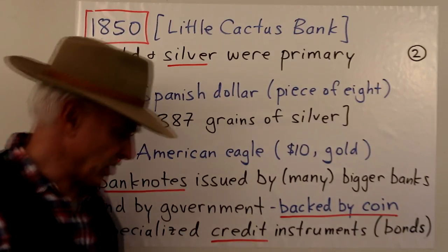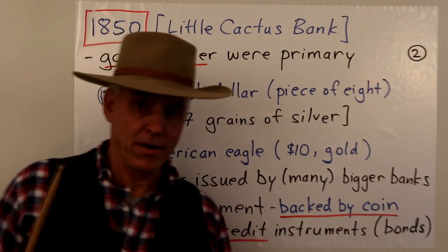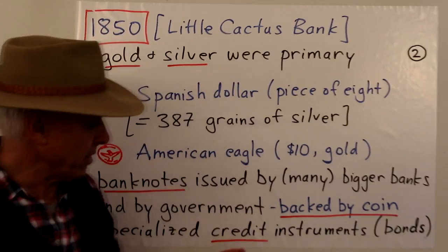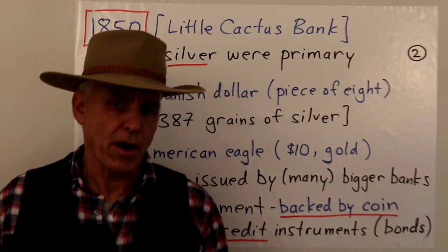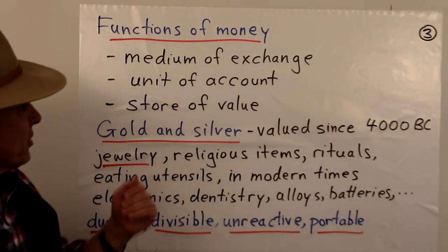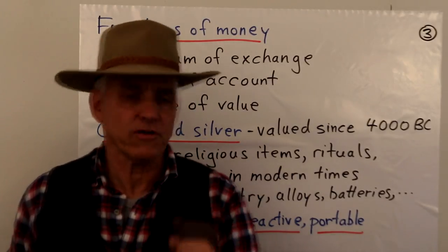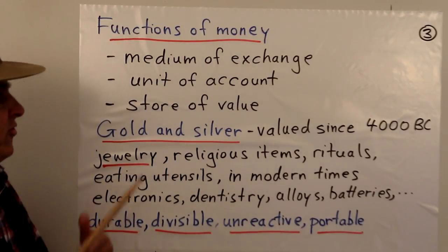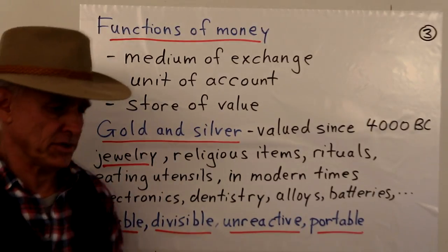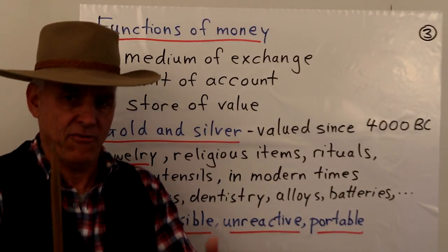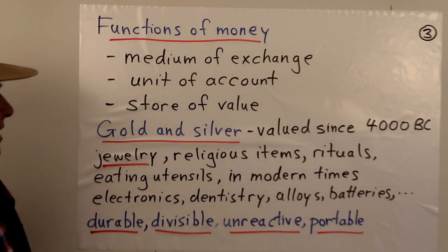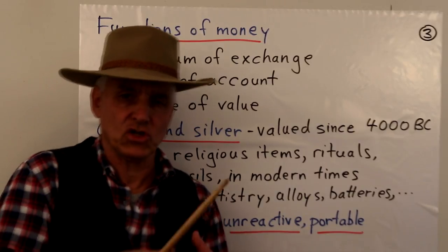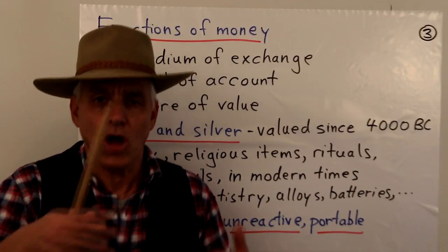At the time there were also specialized credit instruments, much fewer than we have today — though we definitely did have bonds, which played a specialized role. Now, classical textbooks teach us that there are three primary functions of money: first, as a medium of exchange so we can exchange things smoothly; second, as a unit of account so we know how much things are worth; and third, as a store of value so when I've made some money I can store it safely with a long-term view in mind.